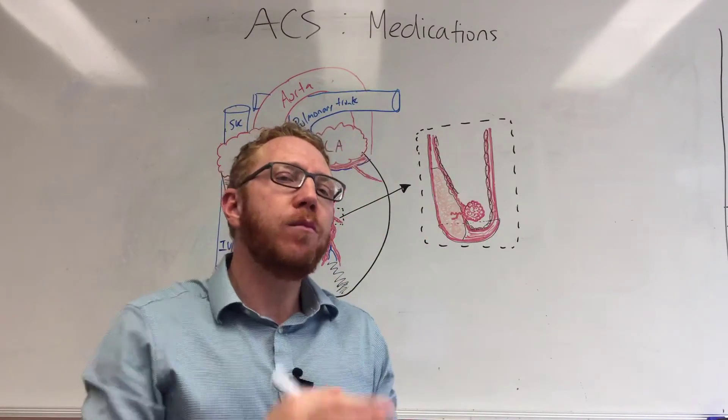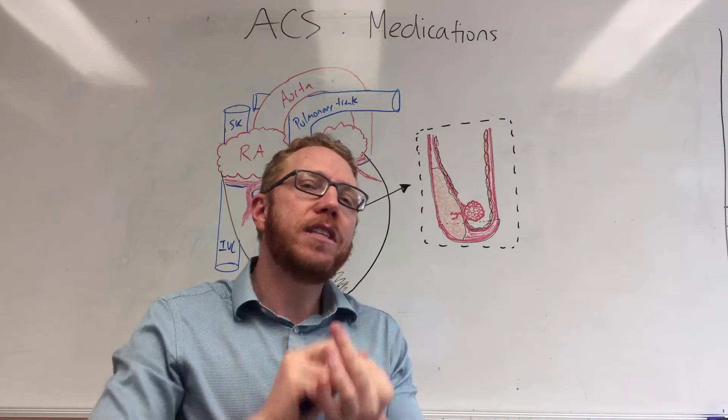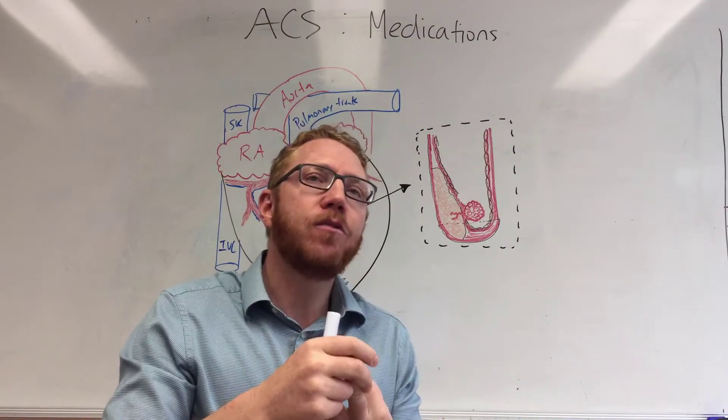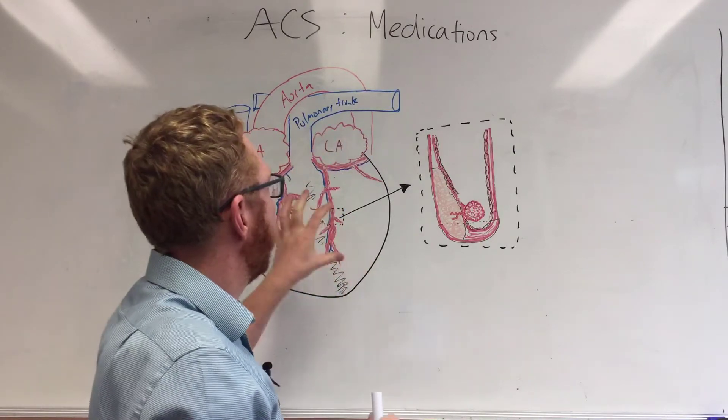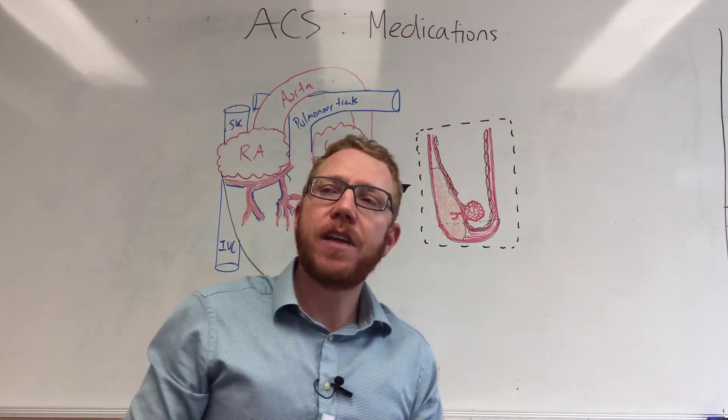When we look at morphine, morphine will take away the chest pain, reduce the anxiety and drop the sympathetic drive, also having a protective effect on the heart itself.